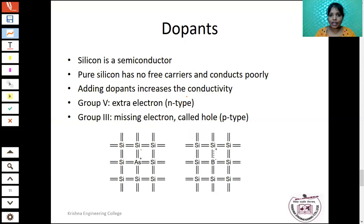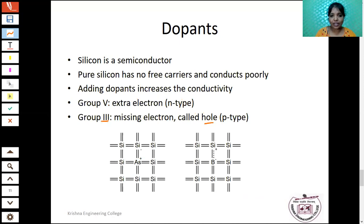There are two types of extrinsic semiconductor: P-type and N-type. In N-type material, the majority carrier is electrons; in P-type, the majority carrier is holes. In N-type semiconductor, a pentavalent (Group 5) impurity is added with the pure semiconductor material. In P-type, a trivalent (Group 3) atom is added with the pure semiconductor material. This is the crystal structure of N-type and P-type semiconductor material.